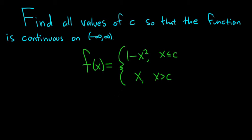Hey, what's up YouTube? This is a pretty interesting problem. Find all values of c so that the function is continuous on the entire real line. First, it's worth noting that 1 minus x squared on its own is a continuous function. Likewise, x is also continuous. But when you put them together like this, there might be a discontinuity at c. So the question is to find the values of c that make this function continuous.